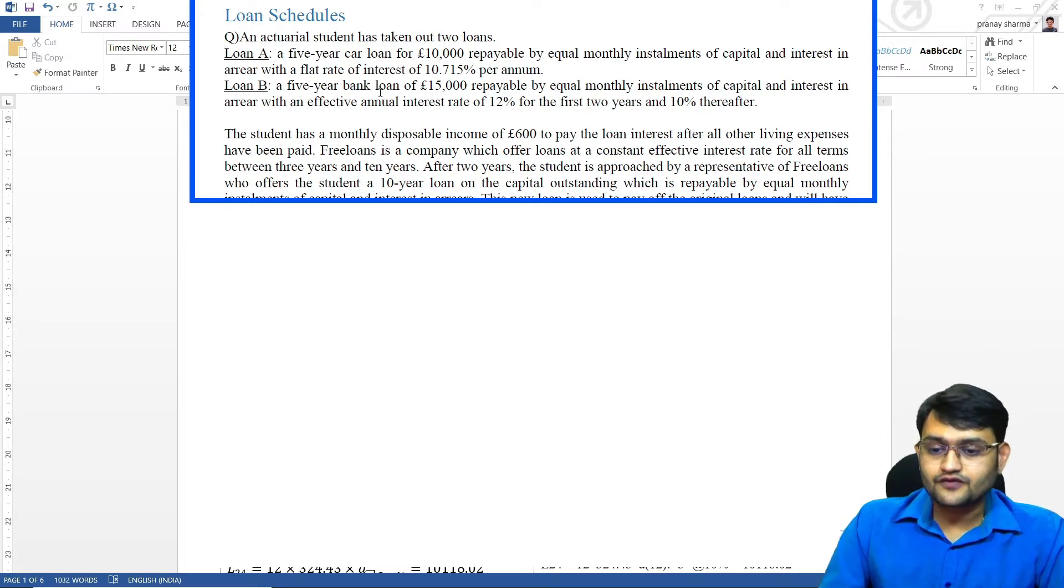Loan B, a five-year bank loan of 15,000 repayable by equal monthly installments of capital and interest in arrears with an effective annual interest of 12% for the first two years and 10% thereafter. So we have two different rates of interest here.